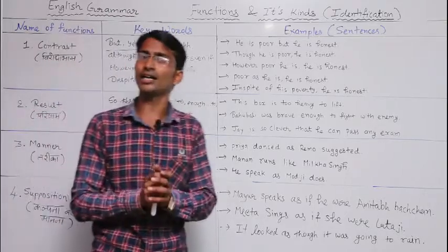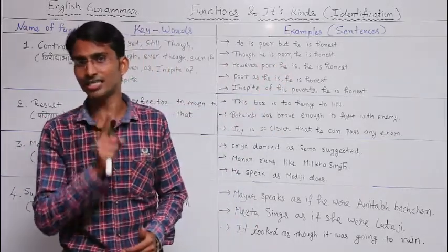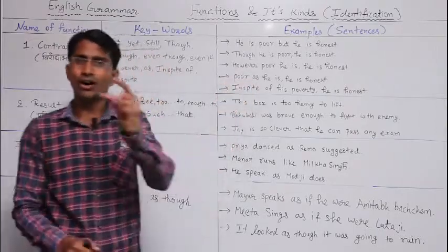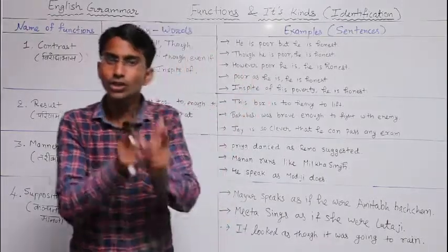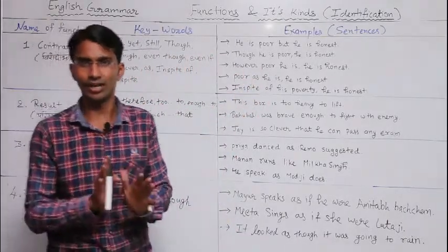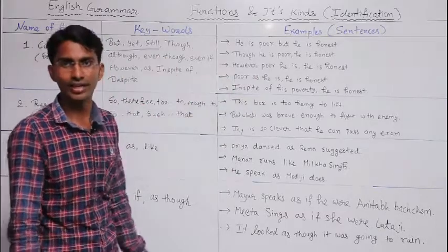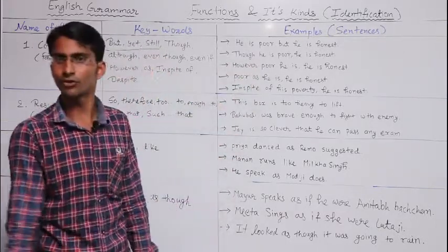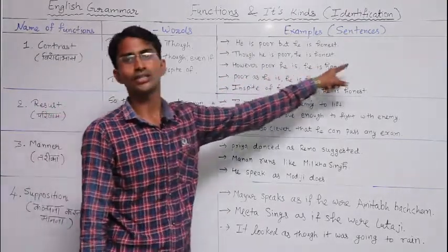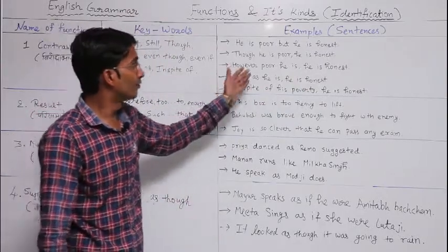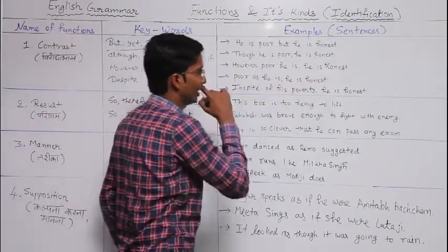Now let us look at 'however.' After 'however,' an adjective comes. The key difference is: we use the adjective after 'however' but before 'as.' Example: 'However poor he is, he is honest.' And using 'as': 'Poor as he is, he is honest.' So that is the difference between these two keywords.